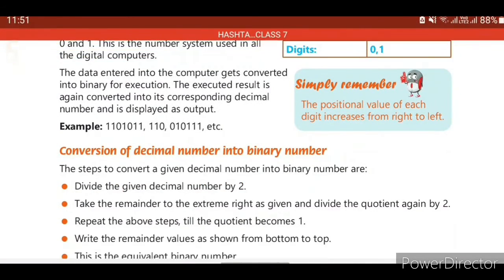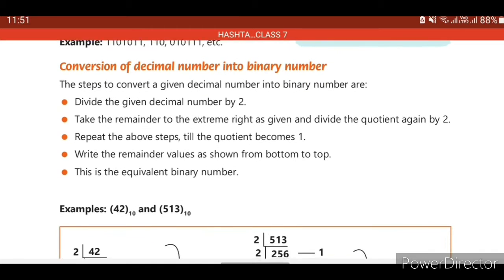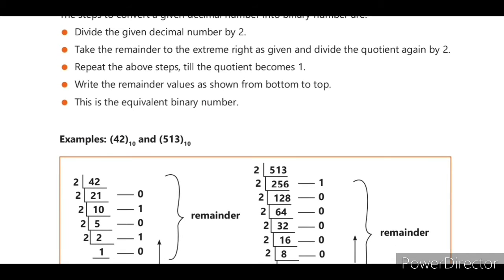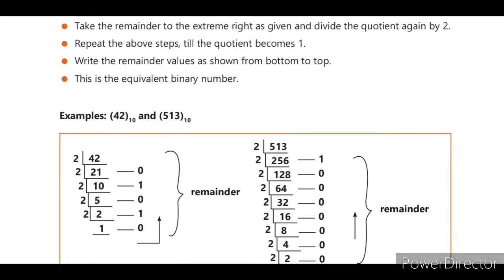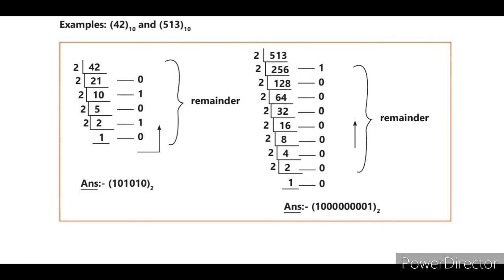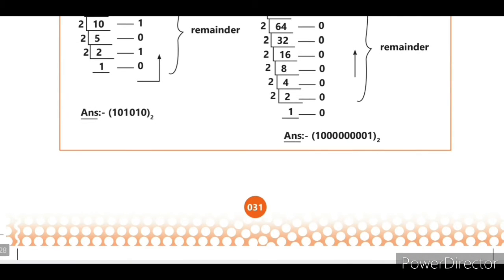We have seen how to convert a decimal number into a binary number using examples 42 and 513. The decimal number should be divided by 2, the remainder taken, and the quotient divided again by 2 until the quotient becomes 1. Then write the remainders from bottom to top. This gives the equivalent binary number, represented with base value 2 in 0s and 1s.